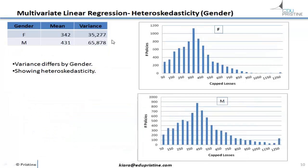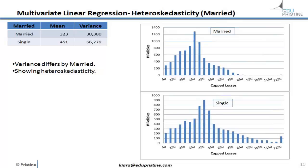When we do the same test with gender, the two distributions — female and male — look similar in shape, but their means are significantly different, about a hundred apart, and their variance is significantly different as well. The graph only looked similar because on the slide they were scaled differently — on the same scale, they would be extensively different. So we also recognize heteroscedasticity in this data for gender. Similarly, married and single show similar differences in variance.